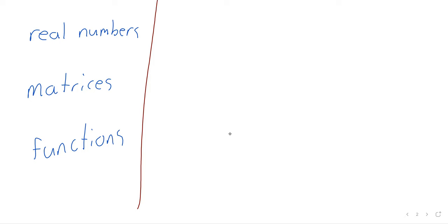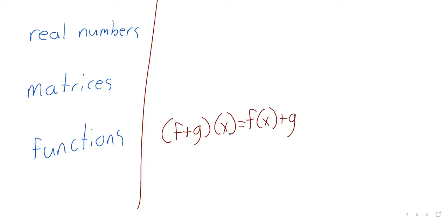For example, we have addition of real numbers, addition of matrices, and addition of functions — that last one done in the natural way. Even though these are very different looking objects, we can add real numbers together, add matrices together, and add functions together.